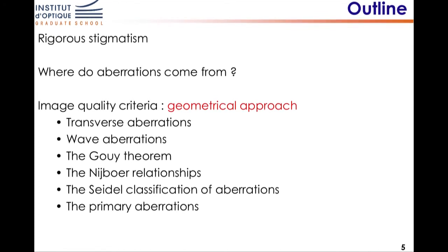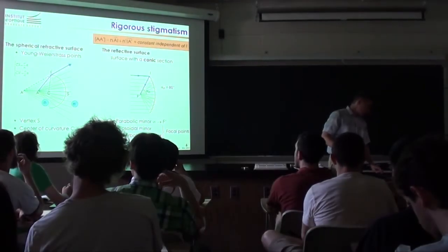The outline of part one is the following. I'm going to talk first to remind you about rigorous stigmatism, because that's the starting point. Then I'll talk about where aberrations come from, going from rigorous stigmatism to aberrations. And then the geometrical approach itself - I will introduce various notions of transverse aberrations, wave aberrations, talk about the Goy theorem, the Nibur relationships, and then the classification of aberrations according to Seidel. Eventually, I will go into the detail of what is called the primary aberrations.